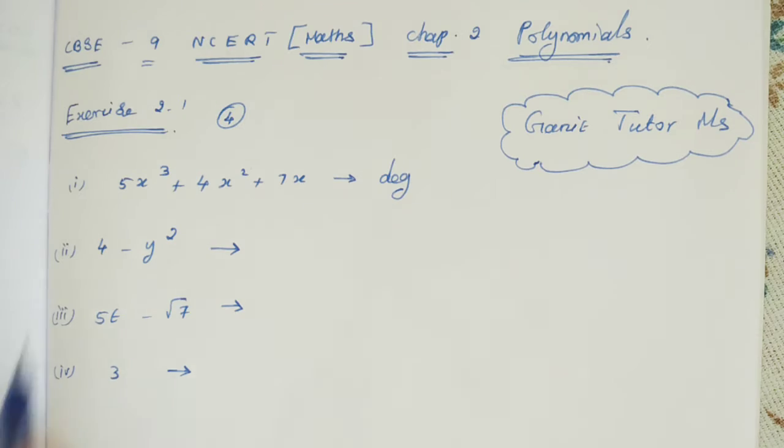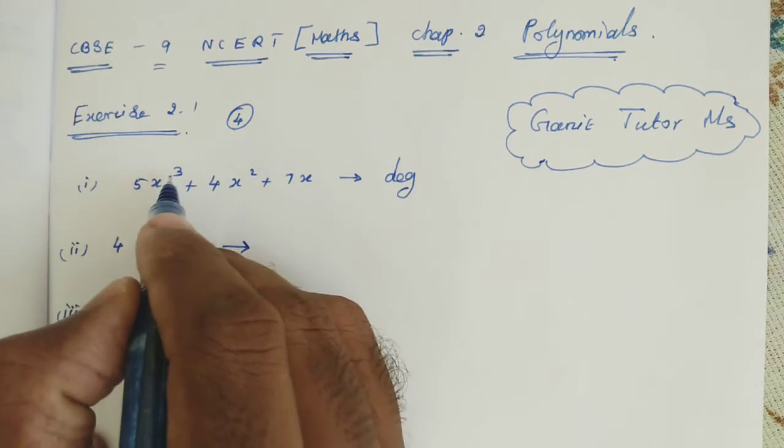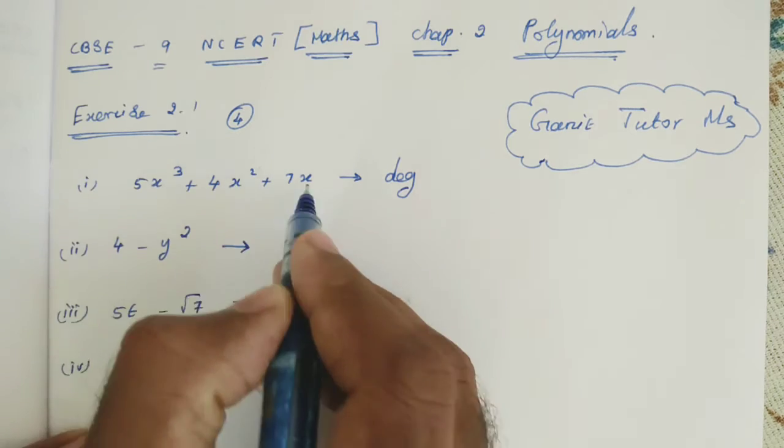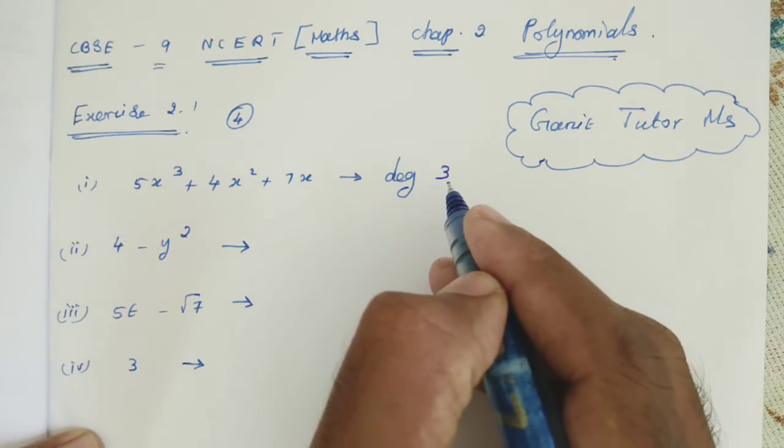So first one: 5x³ plus 4x² plus 7x. So here the power of this term is 3, here 2, here 1. So highest power 3, that is the degree. So degree 3.